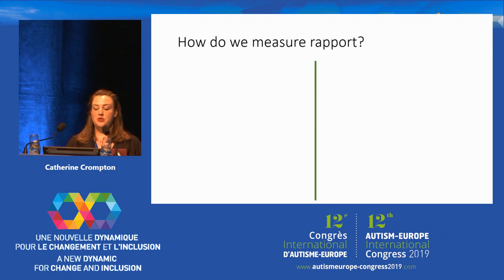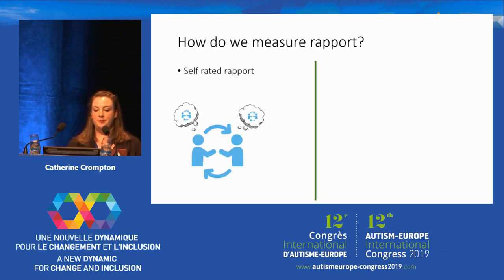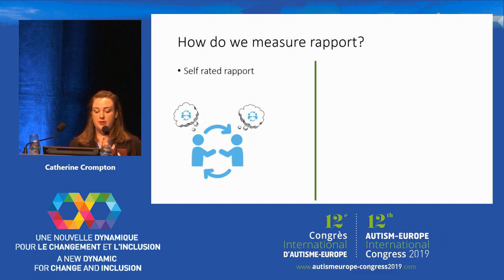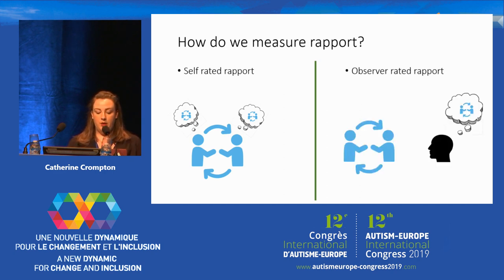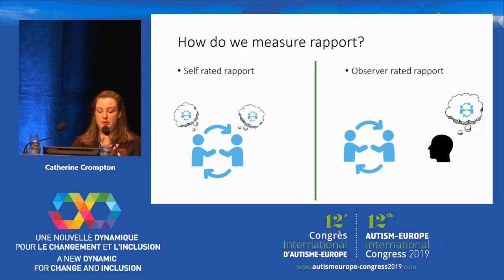We were interested in measuring two types of rapport. We were firstly interested in the rapport that people feel during an interaction with another person. We called this self-rated rapport — when someone has been directly involved in an interaction with another person and afterwards we ask what that experience was like for them. We were also interested in the rapport that observers outside the social interaction pick up on. We call this observer-rated rapport, where we ask people to watch interactions and then rate how well they thought the two people were getting on.